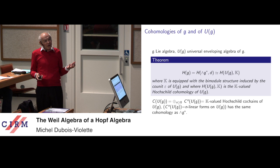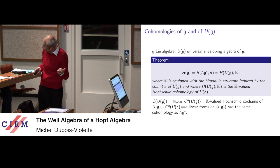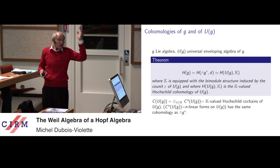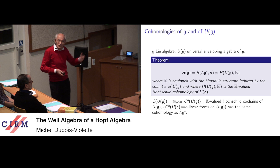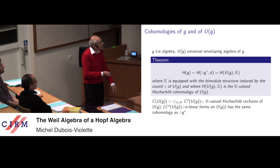The ground field is a trivial module because the universal enveloping algebra of the Lie algebra is a Hopf algebra. In particular, it has a counit. With the counit, you can define a structure of bimodule on the ground field, and therefore you can look at the Hochschild cohomology of U(G) with value in this trivial bimodule. The classical result is that this is again the cohomology of the Lie algebra.